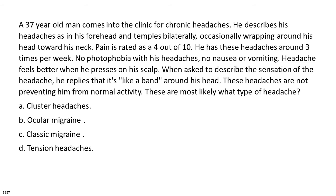A 37-year-old man comes into the clinic for chronic headaches. He describes his headaches as in his forehead and temples bilaterally, occasionally wrapping around his head toward his neck. Pain is rated as a 4 out of 10. He has these headaches around 3 times per week. No photophobia, no nausea or vomiting. Headache feels better when he presses on his scalp. When asked to describe the sensation, he replies that it's like a band around his head. These headaches are not preventing him from normal activity. These are most likely what type of headache?